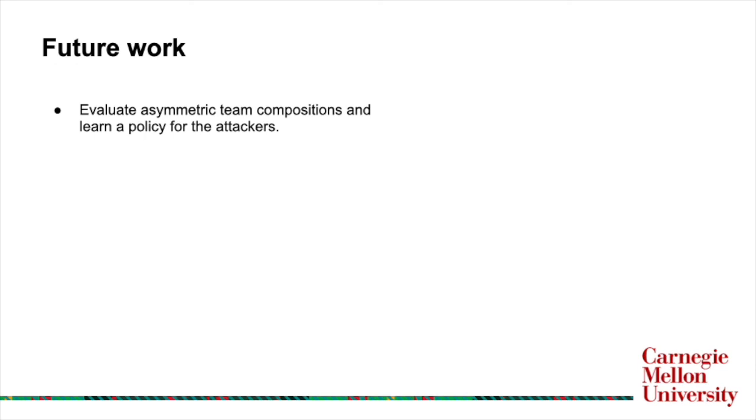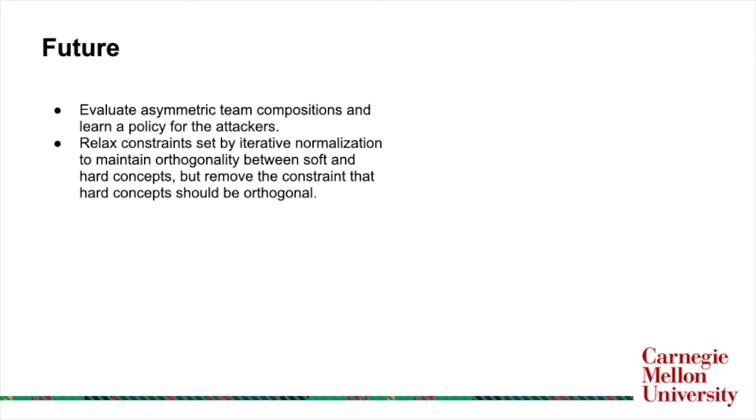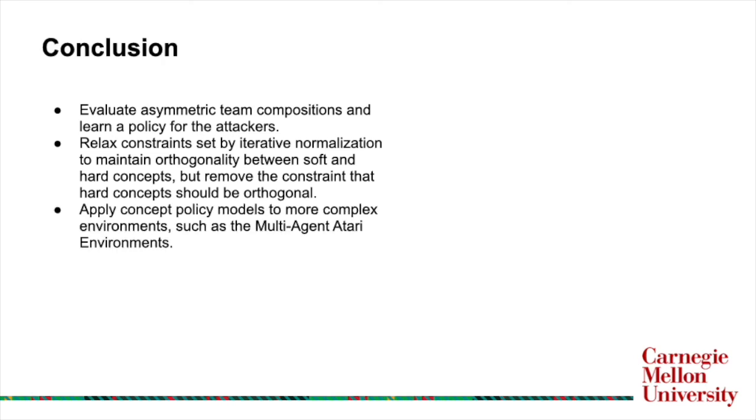And then just a couple of things we want to do for the future. Firstly, we want to evaluate asymmetric team compositions and learn a policy for the attackers. We'd like to relax some of the constraints set by iterative normalization to maintain orthogonality between the soft and the hard concepts, but to remove the constraint that hard concepts should be orthogonal, since many times when we define a set of concepts in the real world, the set of concepts we define will not end up being orthogonal, and therefore it doesn't make a lot of sense to have that constraint there. We hypothesize that that is one of the reasons why the soft concept models are so unstable. And lastly, we'd like to apply concept policy models to more complex environments, such as the multi-agent Atari environments.